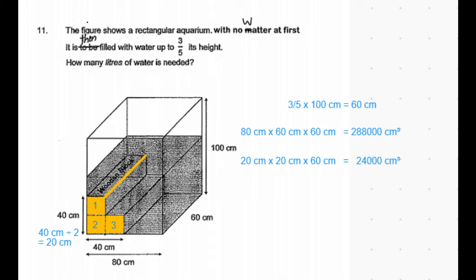We notice that there are three such blocks. So the total volume of the three wooden blocks is 3 times 24,000 centimeter cube which is equal to 72,000 centimeter cube.